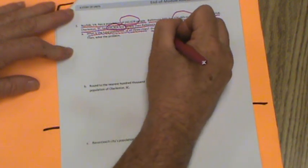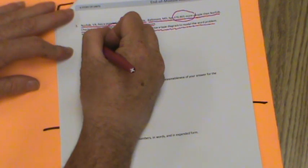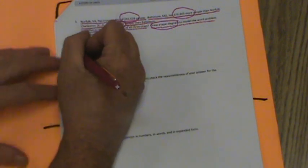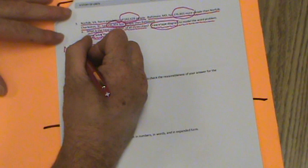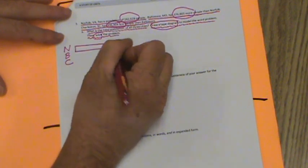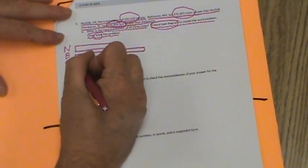They're asking us, what is the total population of all three cities? We need to draw a tape diagram to model the word problem, then solve the problem. There's a lot going on there. So let's get started with our tape diagram. I'm going to help you out on this. I'm going to put an N for Norfolk, a B for Baltimore, and a C for Charleston. Let's do Norfolk first. And it's the smallest of the cities, right? Baltimore has a larger population. I'm going to extend Baltimore out quite a way.